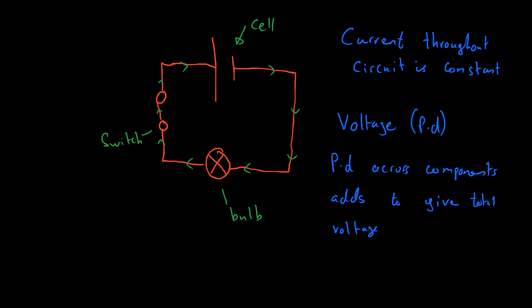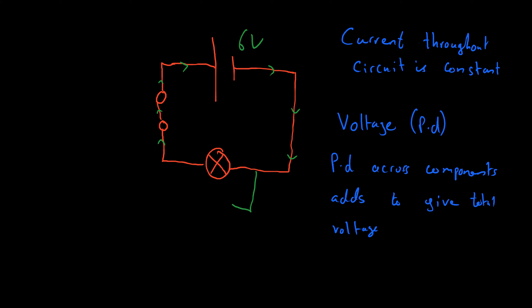Let's say for example that your cell provides 6 volts, and I put in a voltmeter across this bulb. I already know what that voltmeter is going to read because that's the only component in this whole circuit. So all of the potential difference must be taken by this bulb and so that must be 6 volts, because the total voltage of all the components is equal to the total voltage provided by the power supply.